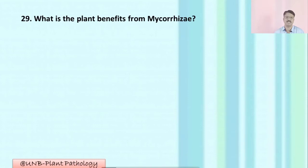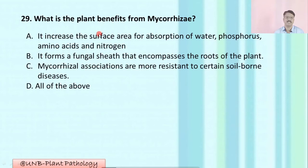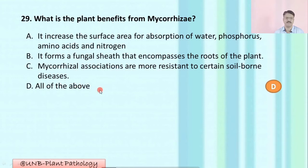Question number twenty-nine: What is the plant benefit from mycorrhizae? A: it increases the surface area for absorption of water, phosphorus, amino acids, and nitrogen; B: it forms a fungal sheath that encompasses the roots; C: mycorrhizae associations are more resistant to certain soil-borne diseases; D: all of the above. The correct option is D: all of the above.